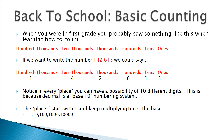Notice that the places start with the ones place and we keep multiplying by the base. We're in a base-10 numbering system, so 1 multiplied by the base 10, multiplied by the base gives 100, and so on and so forth.